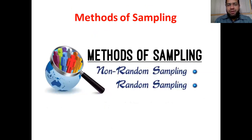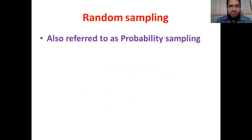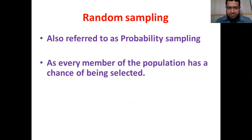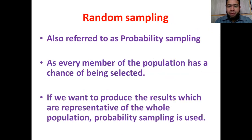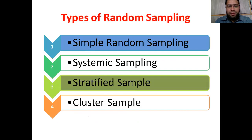Methods of sampling can be divided into two: non-random sampling and random sampling. First we will discuss random sampling. Random sampling is also referred to as probability sampling — each individual has the same probability of being selected as a sample, and every member of the population has a chance of being selected. If we want to produce results which are representative of the whole population, probability sampling is the best method. There are four different types of random sampling: simple random sampling, systematic sampling, stratified sampling, and cluster sampling.